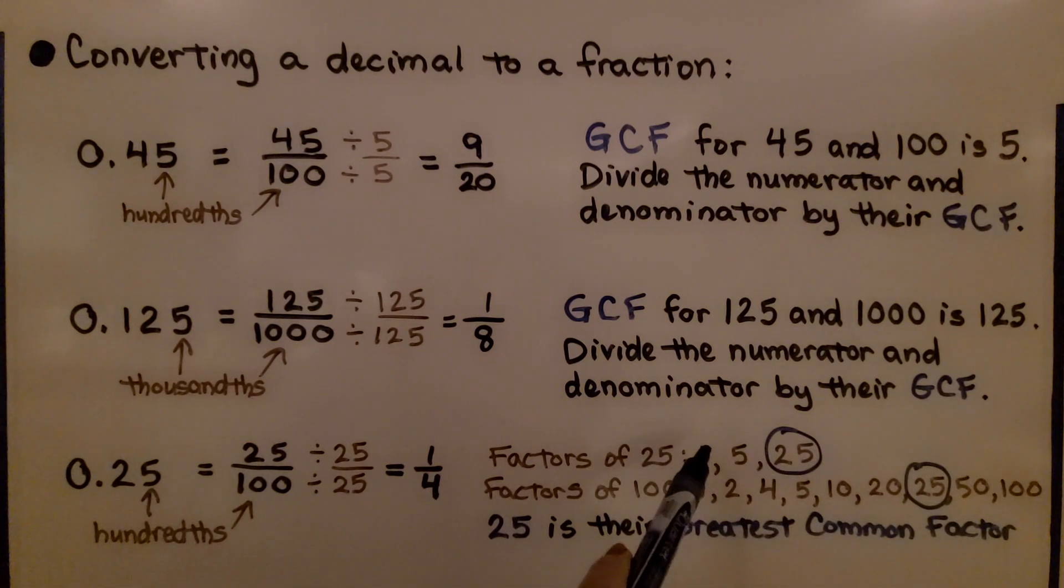The factors for 100 are 1 times 100, 2 times 50, 4 times 25, 5 times 20, and 10 times 10. The greatest one they have in common is 25, so that's what we divide by to get the fraction in its lowest form.